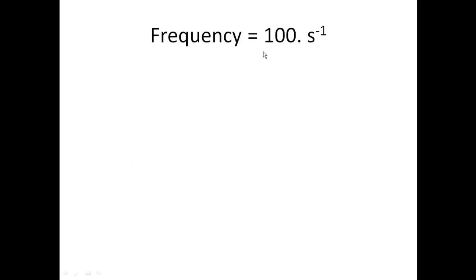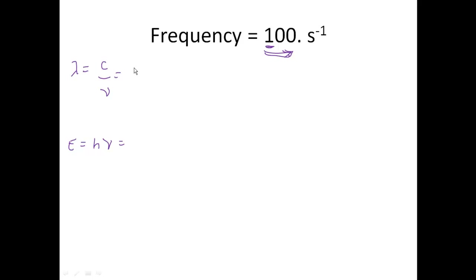So let's look at our next one. Notice that this has three sig figs — remember your rule: the decimal point is present, so we start on the Pacific side and count to the other ocean; there are three digits there. This is our frequency, so we want to figure out our wavelength. Wavelength is equal to the speed of light divided by the frequency, and energy is equal to Planck's constant times the frequency. We're going to use meters here — 3 times 10 to the 8th meters per second — and we're going to divide it by 100, which is going to give us 3 times 10 to the 6th meters.